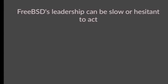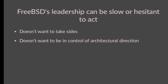FreeBSD's leadership is a nine-person team elected from the ranks of active committers — active committers being defined as people who've committed something within the last 12 months. Core tends to be very consensus-driven, which is good for standing by decisions, but it also means it can be slow to come to a decision. There are cases where that lack of speed can cause more problems while you're trying to get a solution in place. Core tends to not want to take sides, especially in technical discussions, and has historically not wanted to be in control of architectural direction.